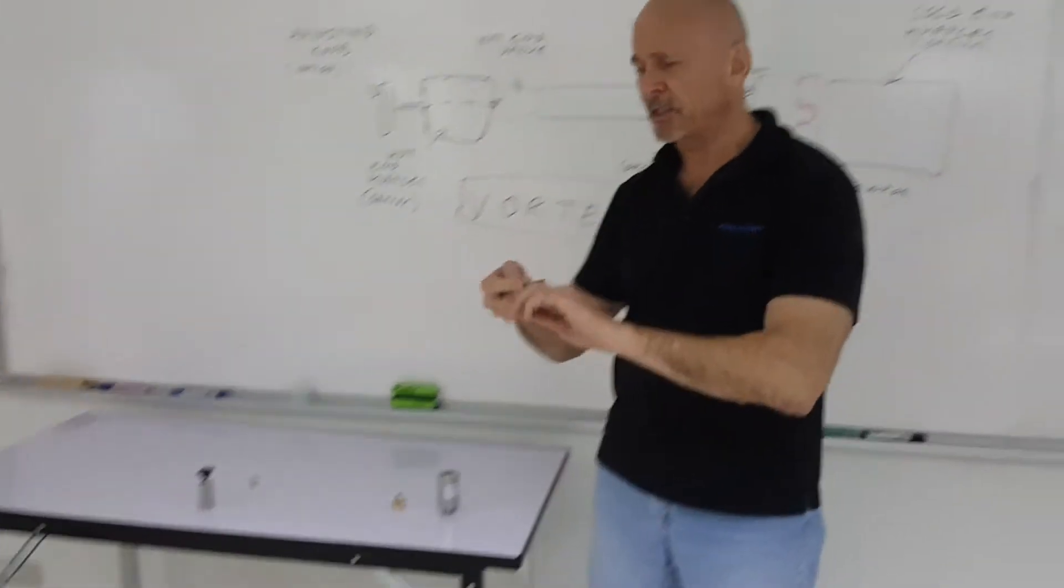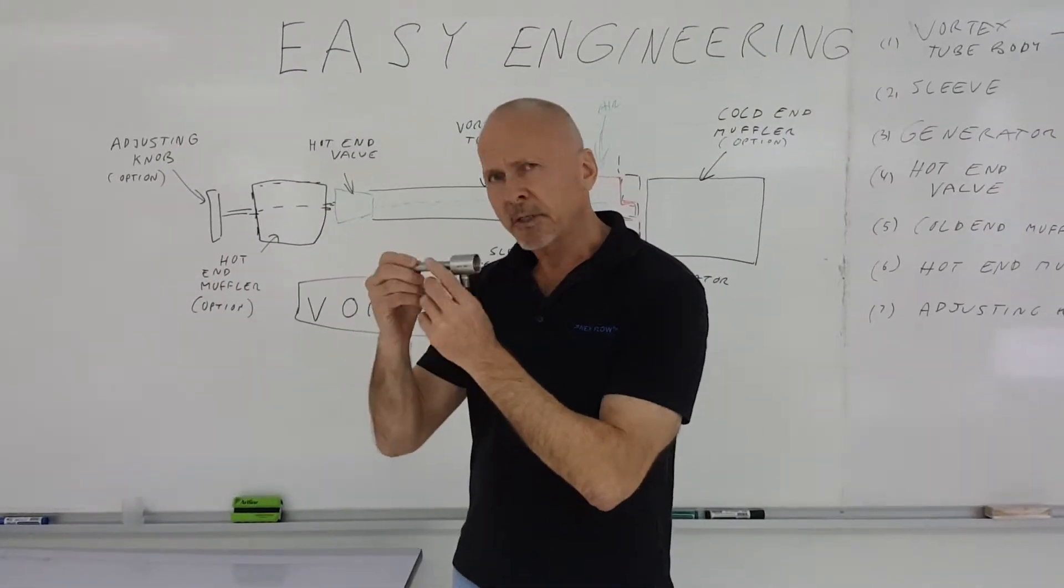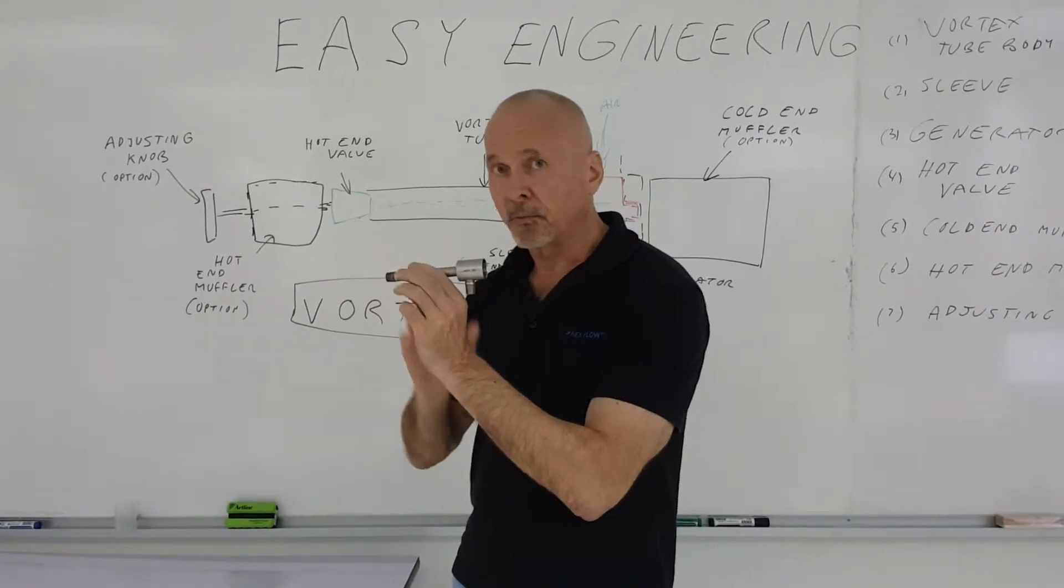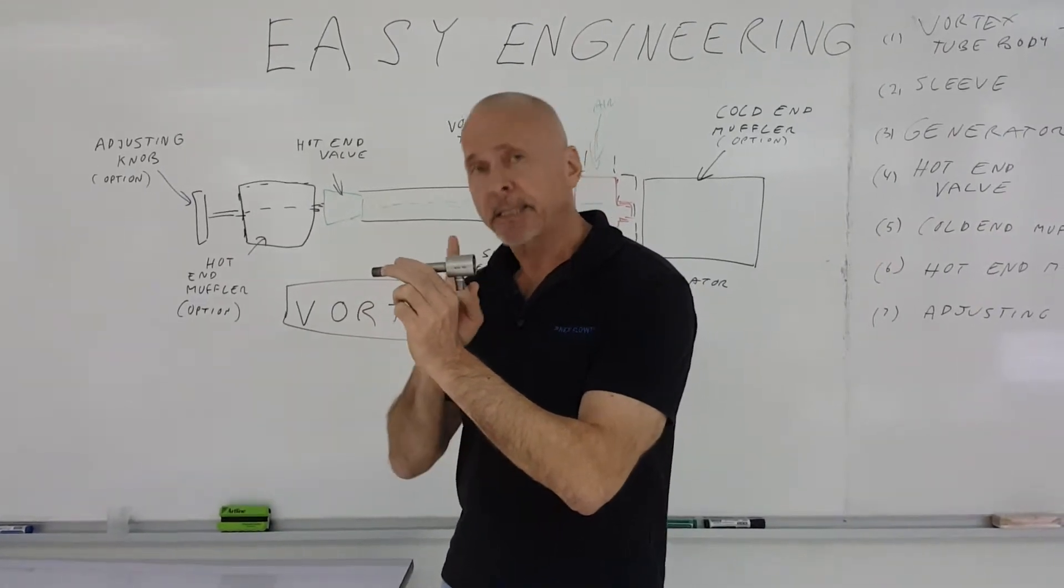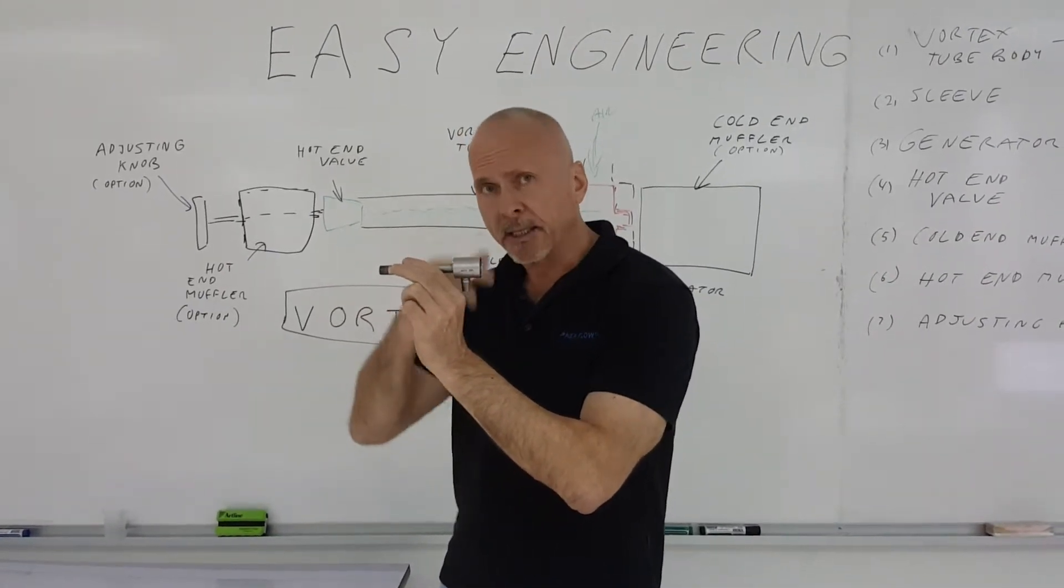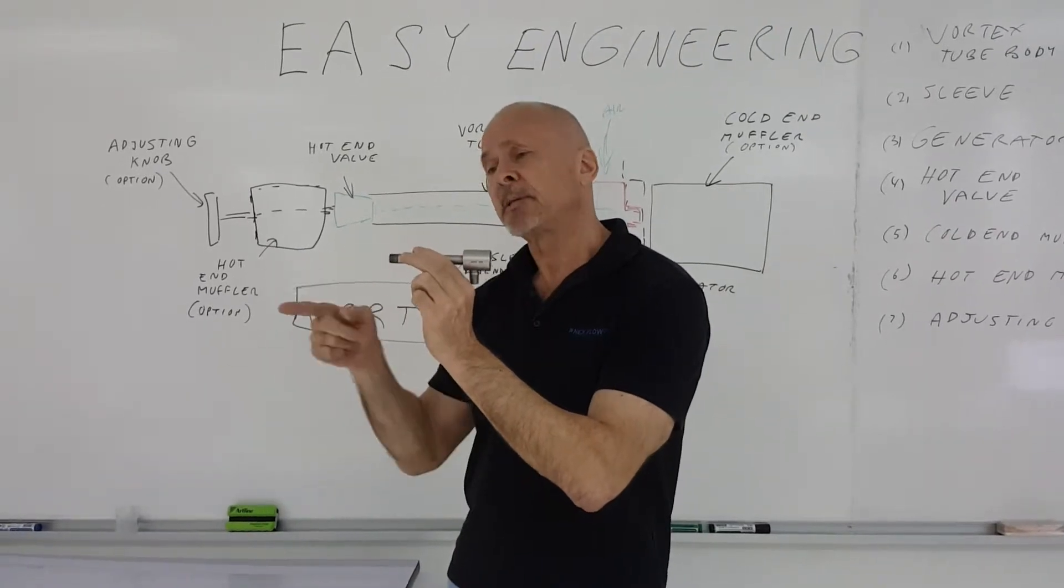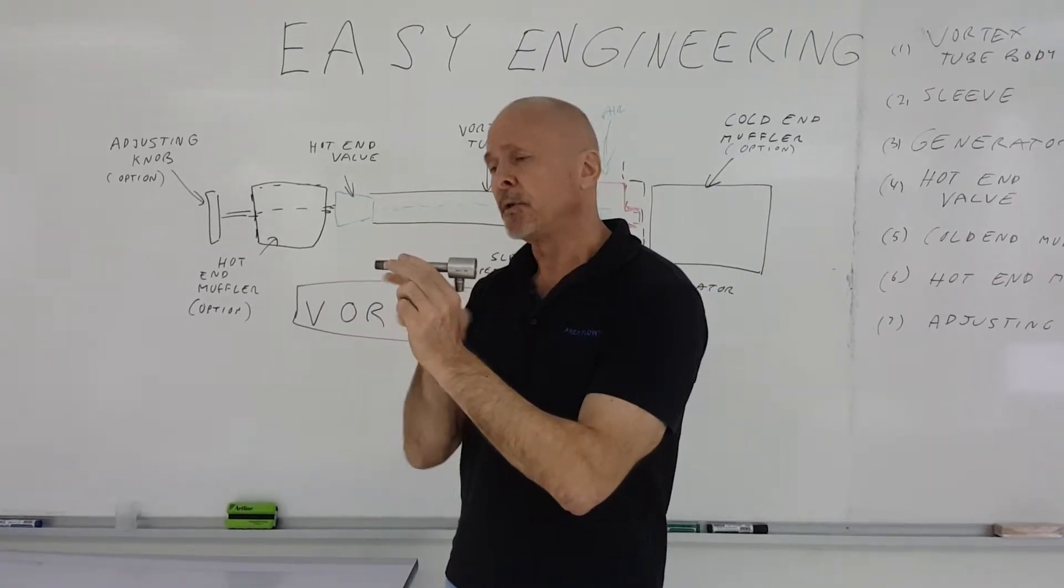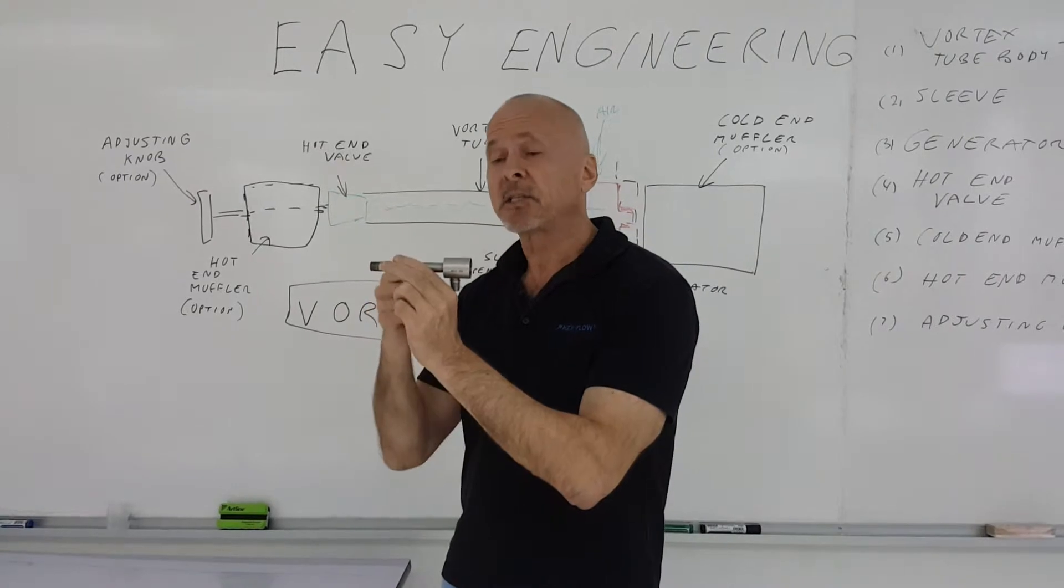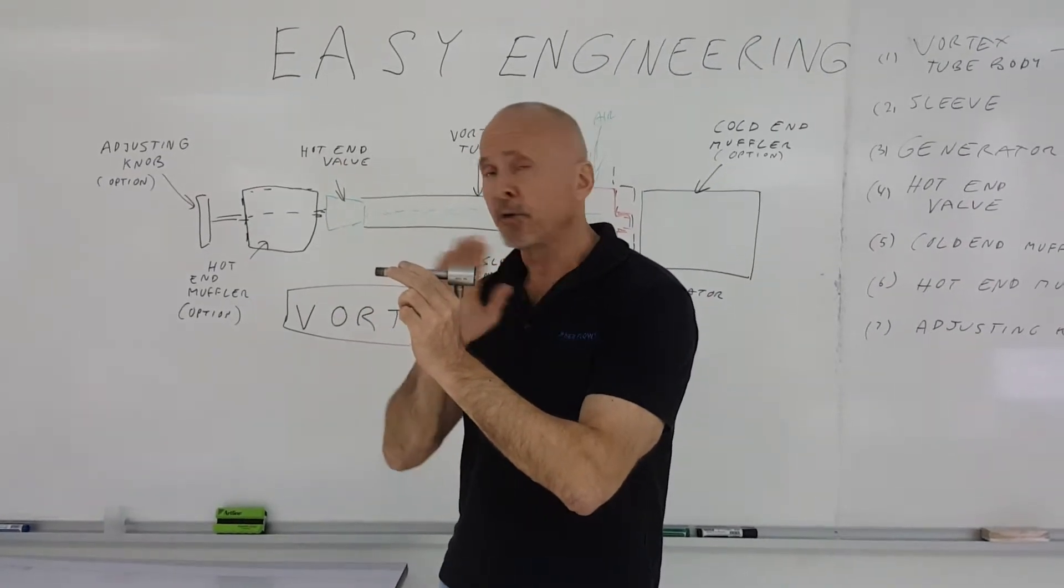First of all, you have the Vortex 2 body. The way a Vortex 2 works, for those who don't know what a Vortex 2 is, is it takes compressed air, spins the compressed air one way, spins it back inside itself, producing a stream of hot air and a stream of cold air, all with no moving parts.